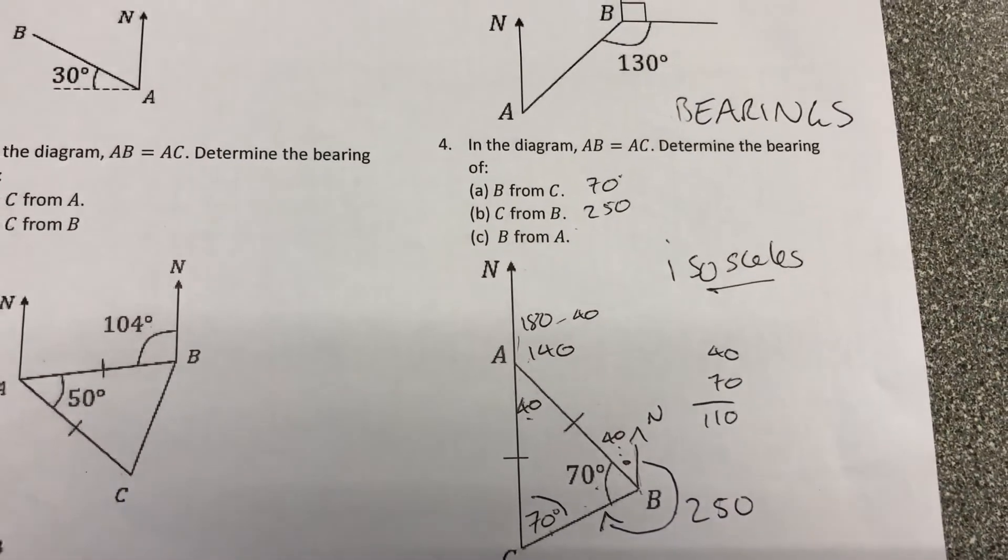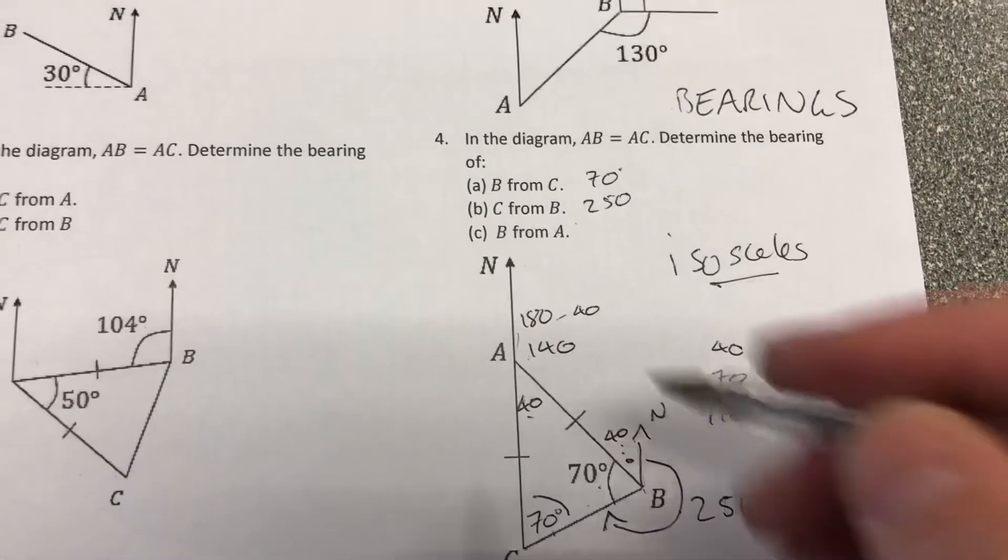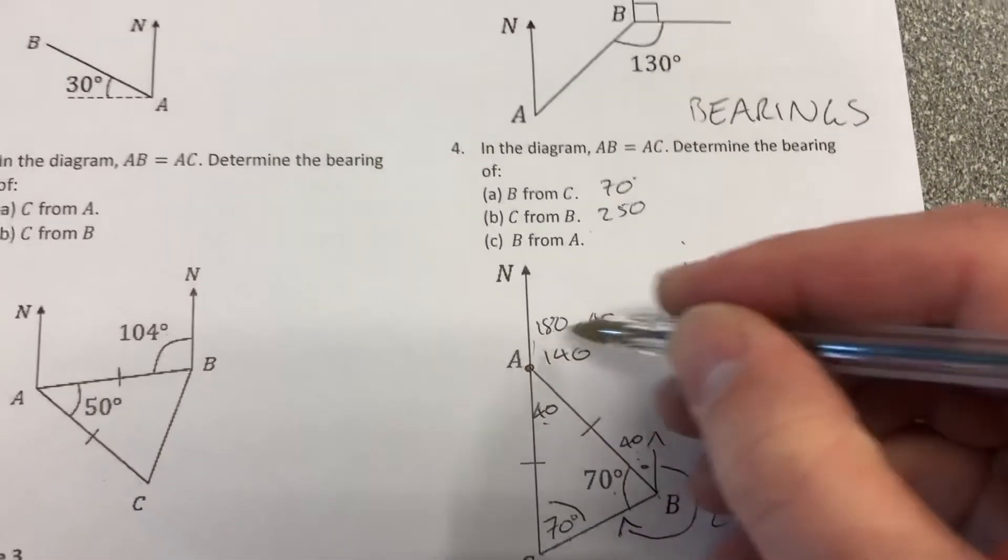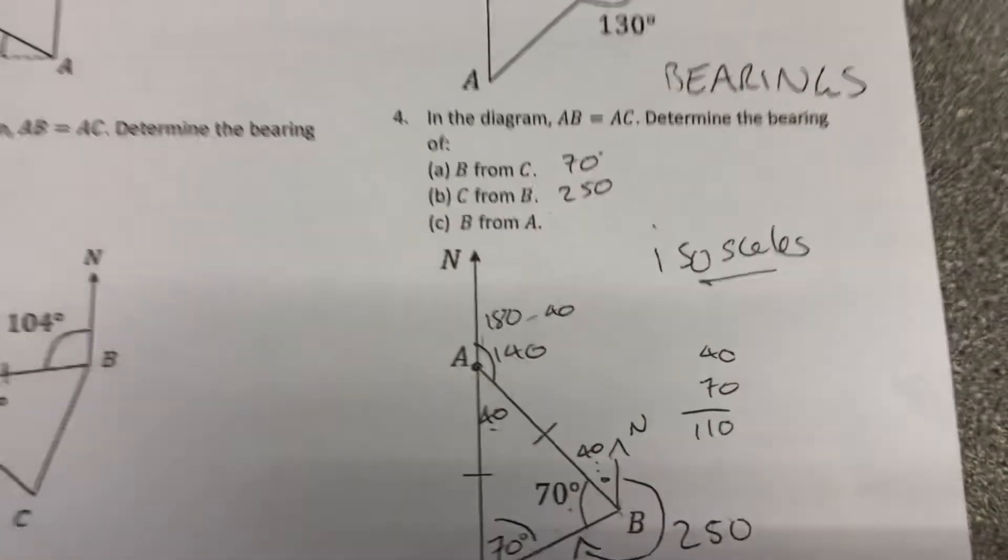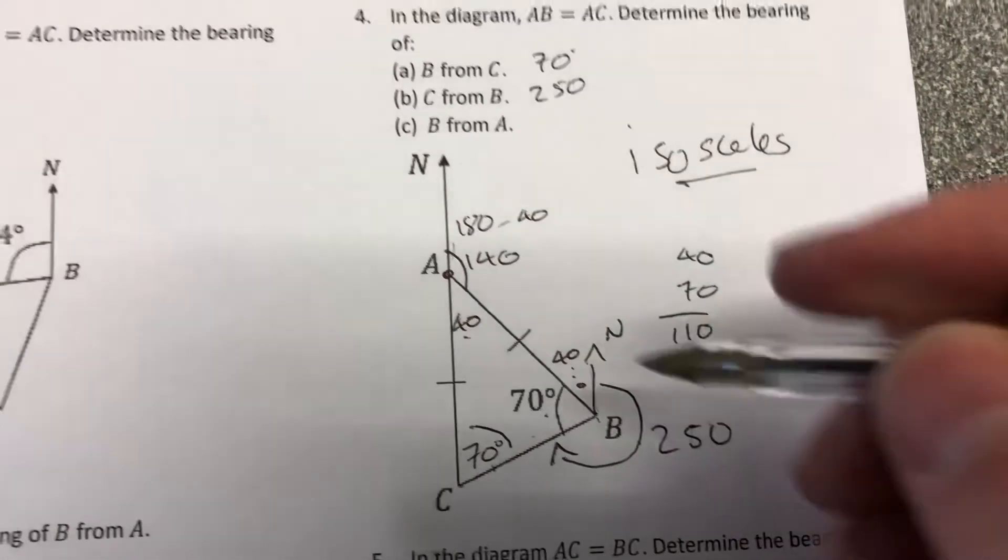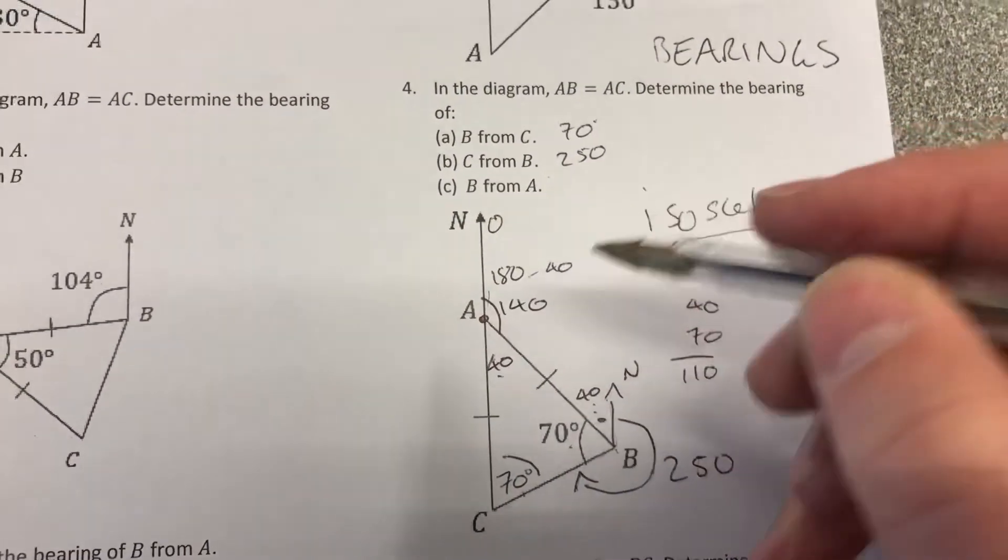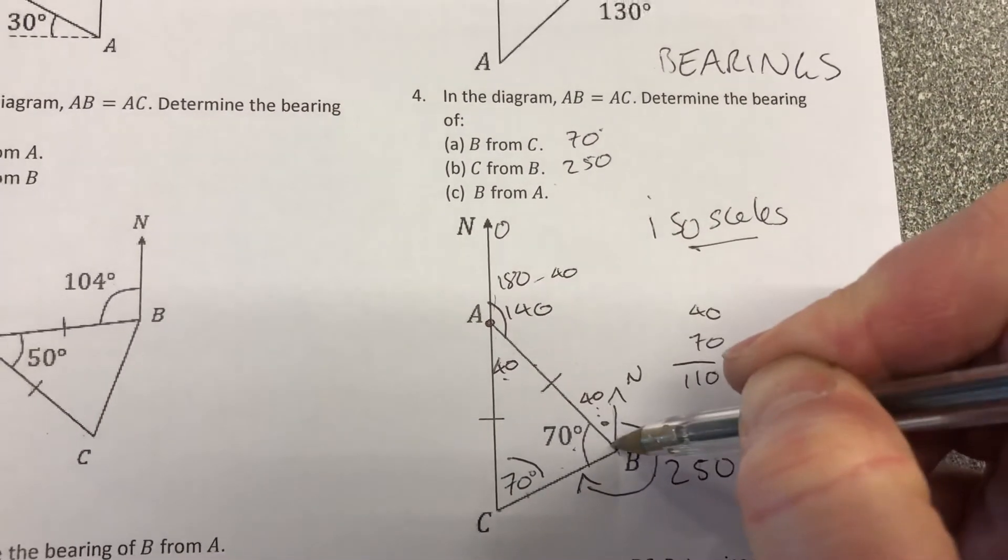B from A. So getting to B from A. So starting at A, we've got to get down to B. We might have even worked it out already. It's 140. Okay, so reading clockwise from north, 140 gets us to B.